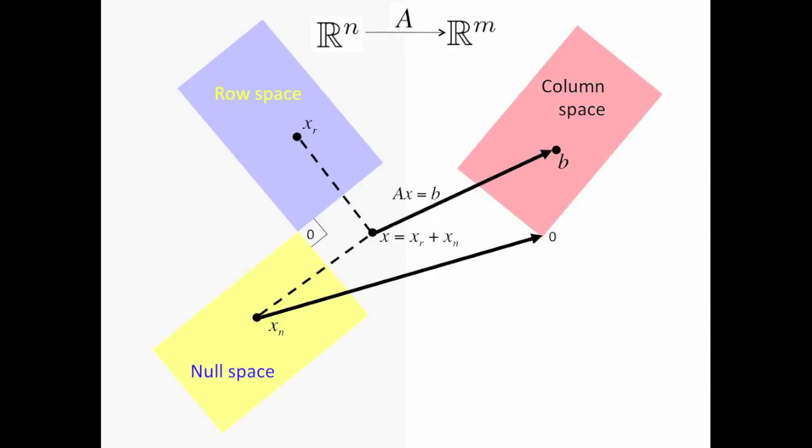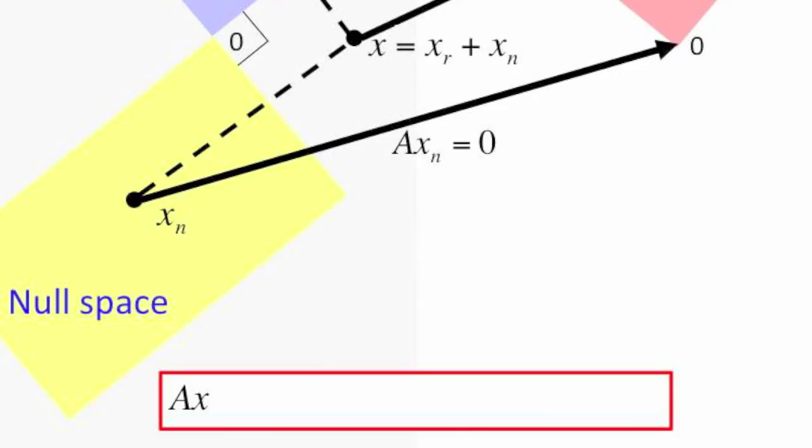We know that a vector in the null space of A is mapped by A to the zero vector. Focus on the box at the bottom. When you do A times x, we now know that's the same as A times x_r plus x_n. We know that distributes because A is a linear transformation.